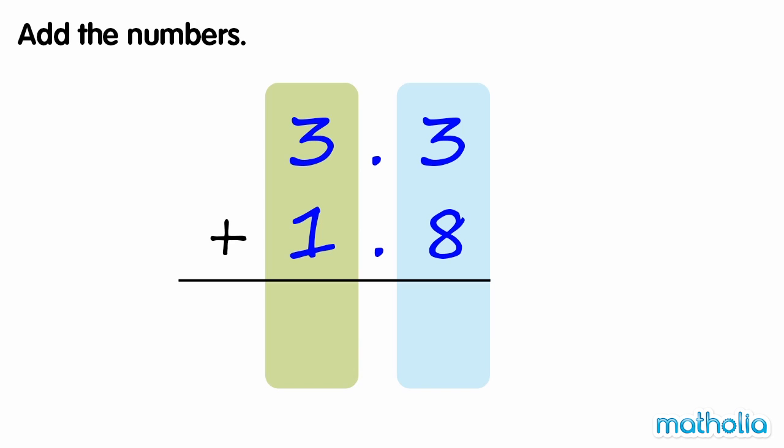Add the numbers. We need to find 3.3 plus 1.8. Start by adding the tenths. 3 tenths plus 8 tenths equals 11 tenths.